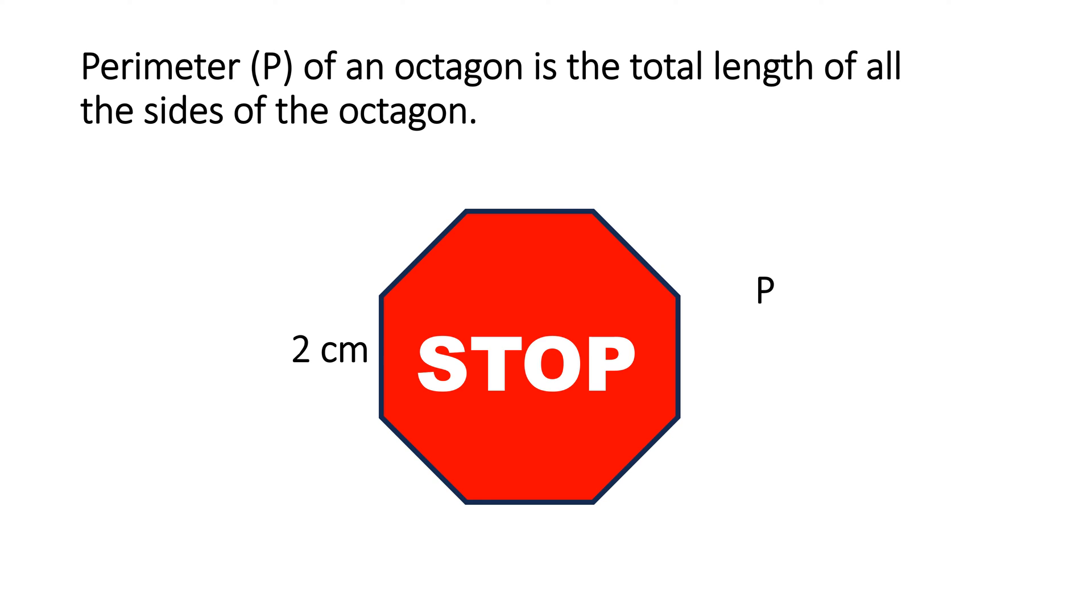P, the perimeter equals s, the side multiplied by 8. Remember an octagon has 8 sides. Since one side of this octagon is 2 centimeters, we will take 2 times 8 and the perimeter equals 16 centimeters.